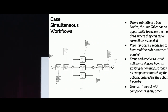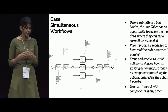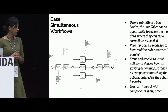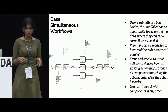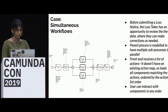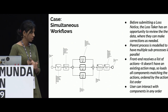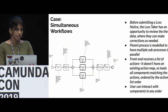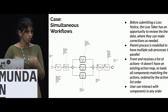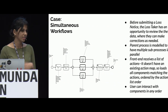We've been showing you how we use Camunda to guide users through a sequential workflow. But we also collect all the information and then show all the screens in parallel. The user can validate all the data entered so far, make changes if they want, and then submit to the database. Before submitting the loss notice, the loss taker has an opportunity to review the data through a simultaneous workflow. The same parent process that takes you through the guided workflow also takes you through multiple sub-processes in parallel — the front-end gets a list of actions all at once rather than one at a time, and the user can make changes to any components in any order.